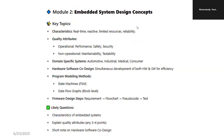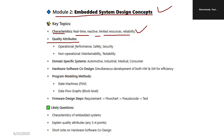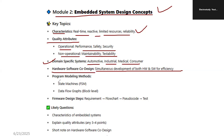Let us go through important concepts of Module 2: Embedded System Design. Characteristics include real-time, reactive, limited resources, and reliability. Quality attributes: operational attributes include performance, safety, and accuracy; non-operational attributes include maintainability and testability. Domain-specific systems include automotive, industrial, medical, and consumer. Hardware-software co-design includes simultaneous development of both hardware and software for efficiency. Program modeling methods include state machines and data flow graphs. Firmware design steps include requirement, flowchart, pseudo code, and testing.